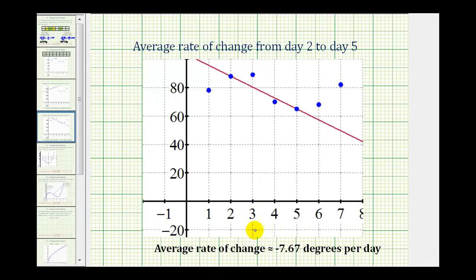For the second question, we found the average rate of change from day two to day five, which would be the slope of this red line passing through those two points. The slope was approximately negative 7.67, which is our average rate of change, representing a decrease of approximately 7.67 degrees per day from day two to day five. That's going to do it for this example — I hope you found this helpful.